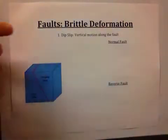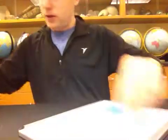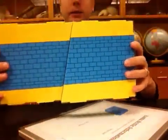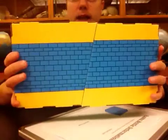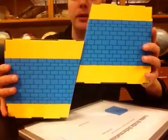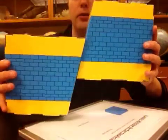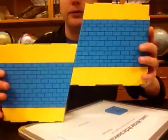The first fault we're going to look at and draw is called a normal fault. Holding the block in the same orientation as our picture, we again have the hanging wall and the foot wall. It's called a normal fault because gravity wants to pull the hanging wall down the foot wall. When that happens, we look at it as normal. In dip slip, the motion is vertical along the fault surface, and we're left with an offset.